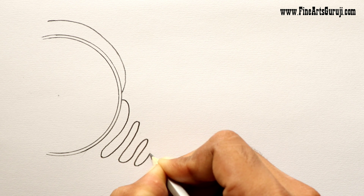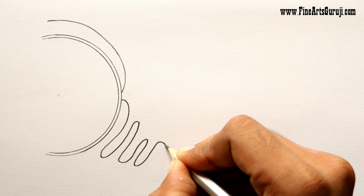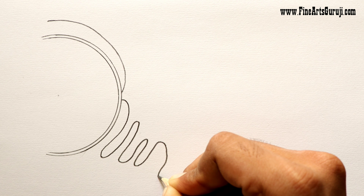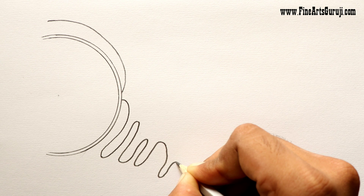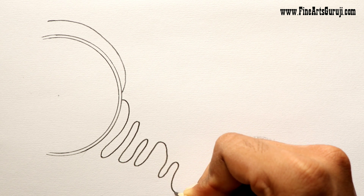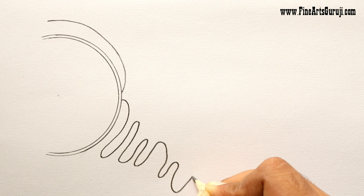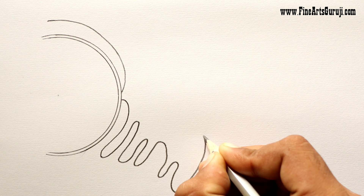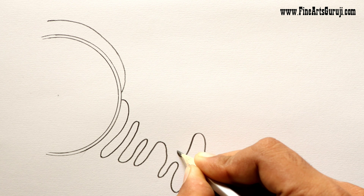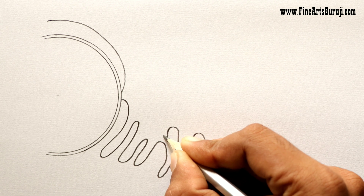Here you can use any darker pencil like 8B, 2B, or 6B because here you have to draw the rough endoplasmic reticulum. That's why it needs to be thick and a little bit dark. So I recommend you to use a darker pencil.